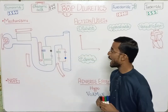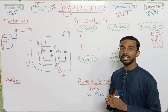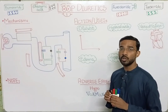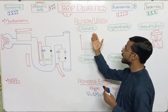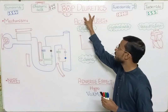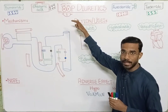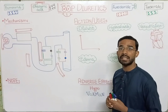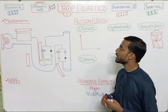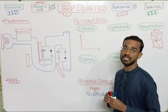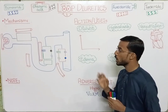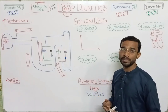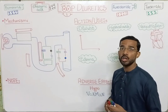Loop diuretics act on the ascending limb of the loop of Henle. The main action of loop diuretics, as the name indicates, is that these are diuretics that act on the loop of Henle. As diuretics work by increasing the volume of urine, loop diuretics also increase urine volume. First, we will discuss the normal mechanism, and then we will discuss how loop diuretics act on the ascending loop of Henle.